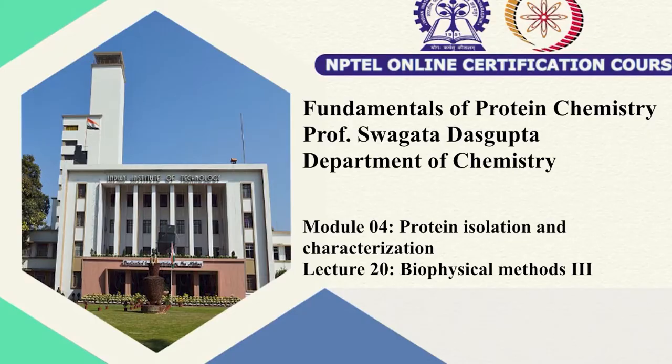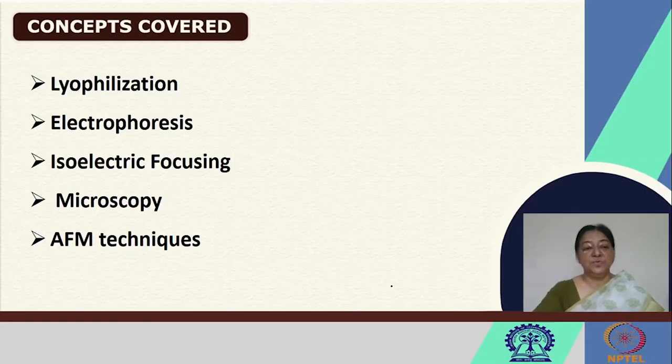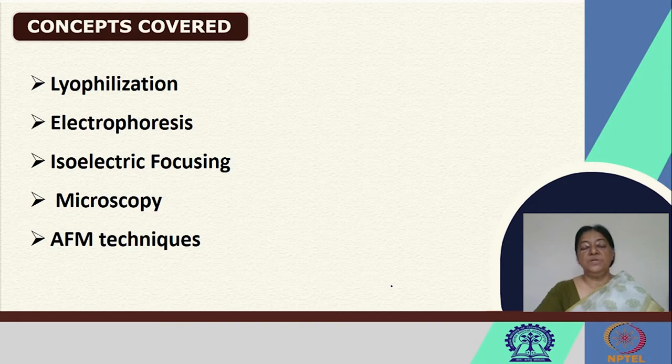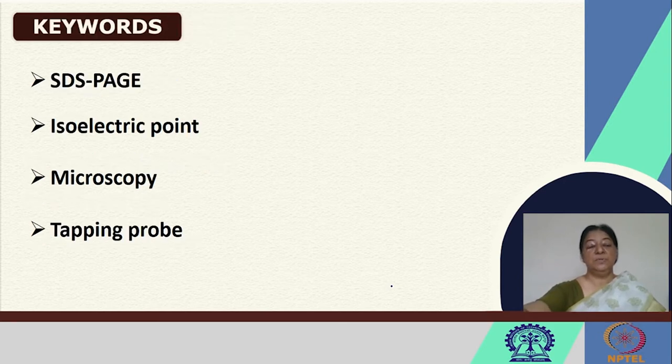In our final discussion on module 4 that deals with protein isolation and characterization, we will be looking at some other biophysical methods commonly used for structure analysis, mostly for molecular weight determination and other methods by which we can characterize the protein. In this class, we will be looking at lyophilization, electrophoresis, isoelectric focusing, microscopy and AFM techniques, which are important in understanding the protein as a whole and the protein in the form of aggregate. We will also revisit the concept of isoelectric point.